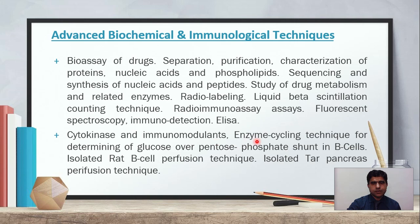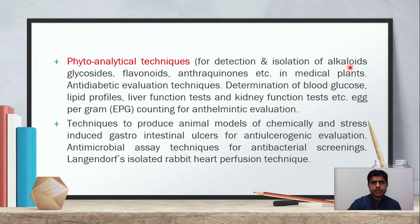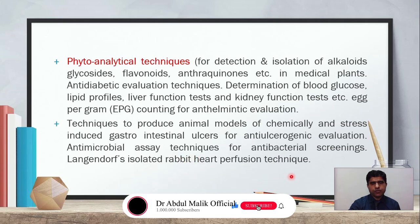Further topics include cytokines and immunomodulants, enzyme cycling technique for determining glucose over pentose phosphate shunt in beta cells, isolated RAD beta cell perfusion technique, isolated rat pancreas perfusion technique. Also covered are phytoanalytical techniques for detection and isolation of alkaloids, glycosides, flavonoids, and anthraquinones in medicinal plants. Antidiabetic evaluation techniques, determination of blood glucose, lipid profile, liver function tests and kidney function tests, egg per gram counting for antihelminthic evaluation, techniques to produce animal models of chemically and stress-induced gastrointestinal ulcers for anti-ulcerogenic evaluation, antimicrobial assay techniques for antibacterial screenings, and Langendorff isolated rabbit heart perfusion techniques.